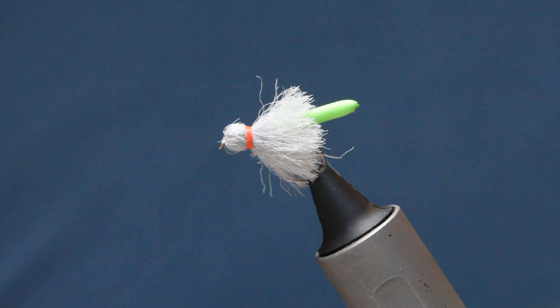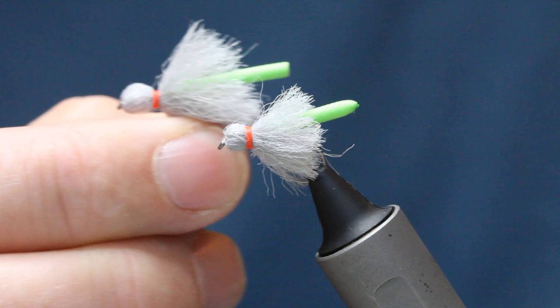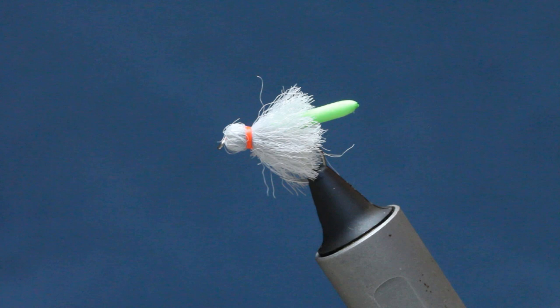This one is an amazing dry fly and an amazing indicator that will catch fish. What happens is when it's riding along the water and the weight of the nymph kicks in, it'll tip and acts as the perfect indicator. So it's kind of two flies in one, just an amazingly good pattern.